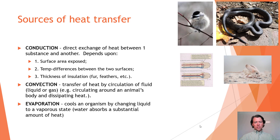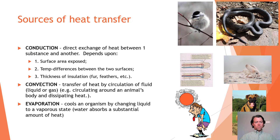Convection is the transfer of heat by circulation of fluid — liquid or gas — around an animal's body, dissipating the heat. Think about counter-current heat exchangers and large thermal windows like the giant ears of a small desert rat, which create a large surface area to get rid of extra heat. Evaporation cools an organism by changing liquid into vapor, with water absorbing a great deal of heat during the vaporization process. This can happen through sweating or panting.